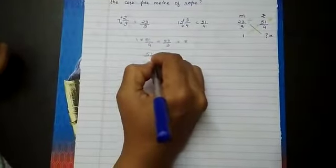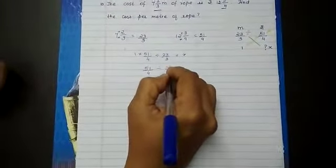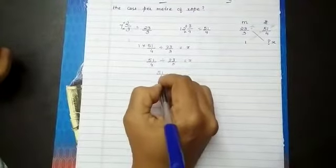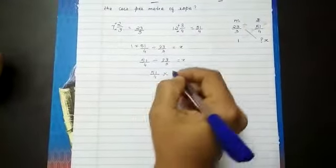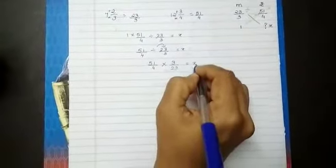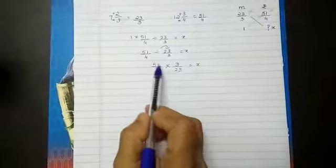Any number multiplied by 1 is the number itself. So 51 by 4 divided by 23 by 3 equals x. When division becomes multiplication, the following number will be the reciprocal. So now here there is no cancellation.